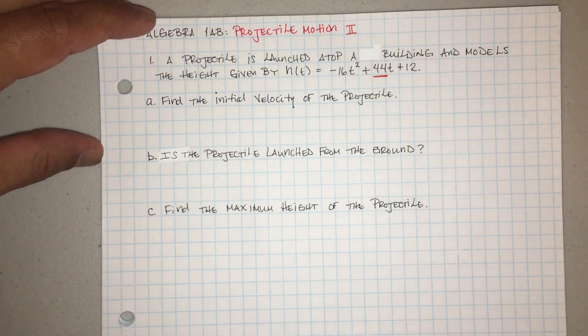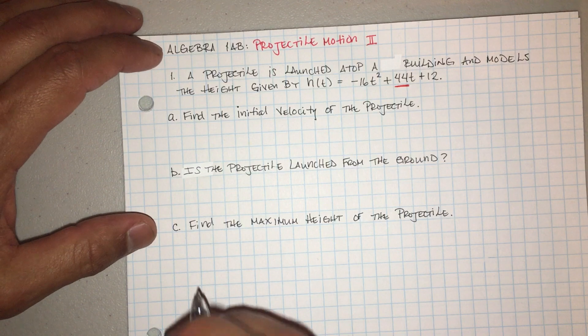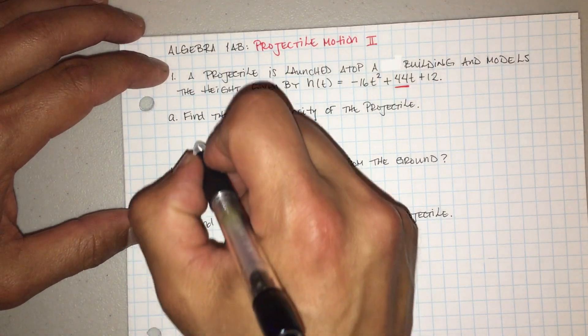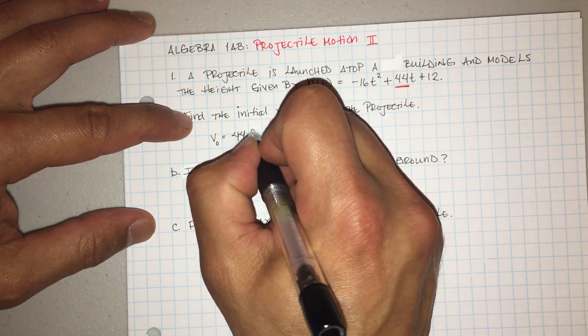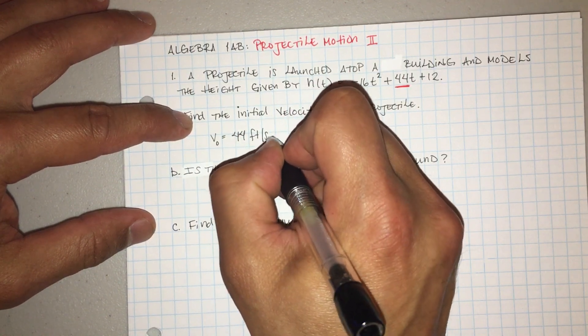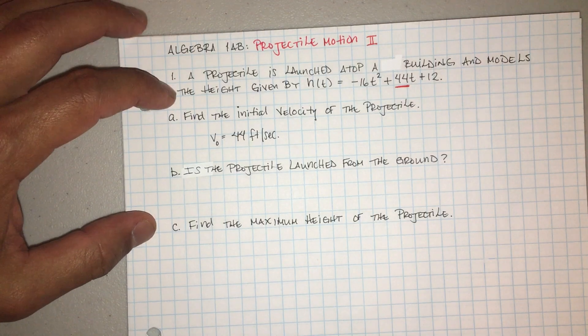So the velocity, the initial velocity, la velocidad inicial, va a ser 44 pies por segundo. It's going to be 44 feet per second. Because your velocity is given by this one which is v, v sub nod of t.